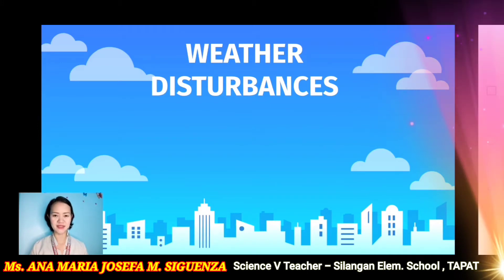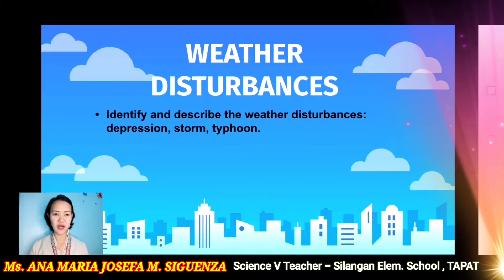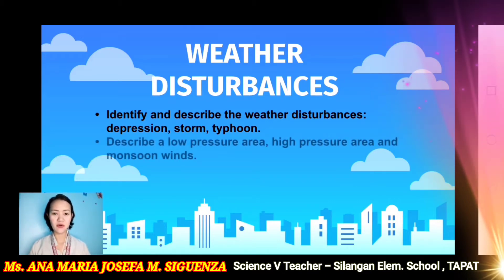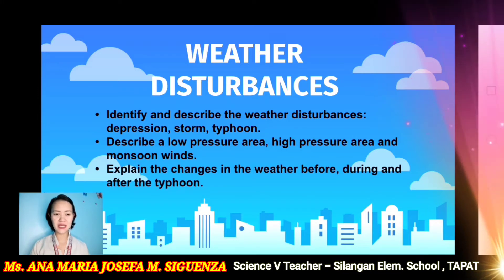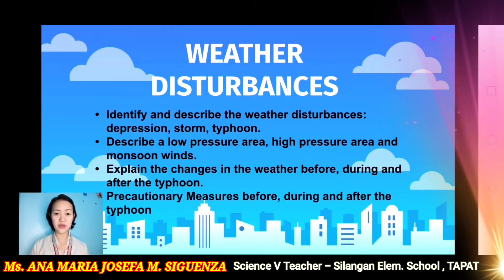These are the objectives that we need to tackle in order for us to learn more about the weather disturbances. First, we have to identify and describe the weather disturbances such as depression, storm, and typhoon. We also need to describe a low-pressure area, high-pressure area, and the monsoon winds. We also need to explain the changes in the weather before, during, and after the typhoon. And we need to practice the precautionary measures before, during, and after the typhoon.